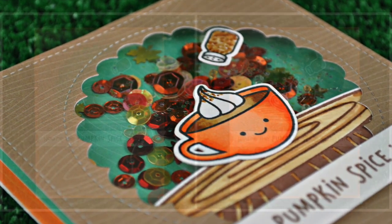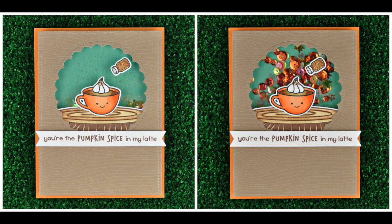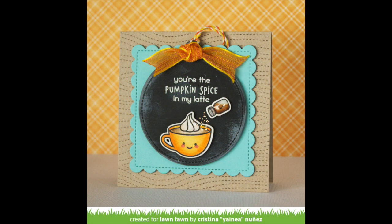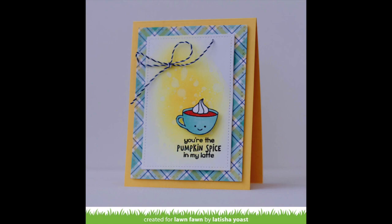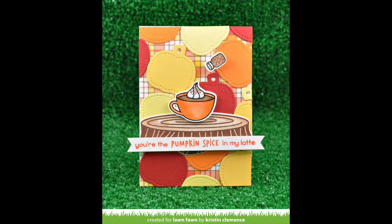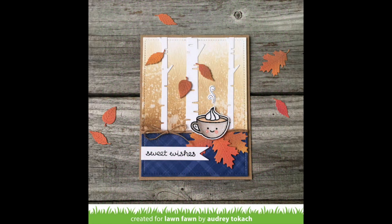So next up we have some cards from our fabulous design team and the first card is by Yanaya and I love that chalkboard look that she created on that little circle tag. It's so cool. Leticia created a really beautiful kind of yellow blended area that really highlights that cute little pumpkin spice latte. Kristen's card is so cool. I love how she layered those pumpkin tags in the background to create kind of her own custom pattern paper and then Audrey's background. Oh my gosh, it's just wow. This is just so beautiful.